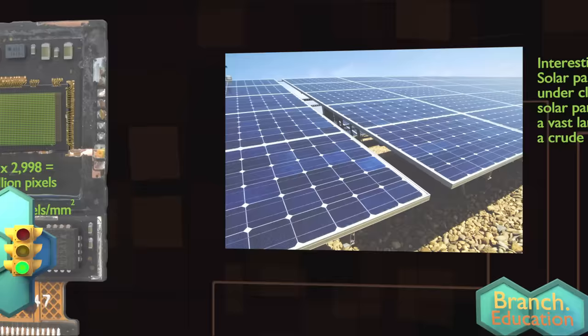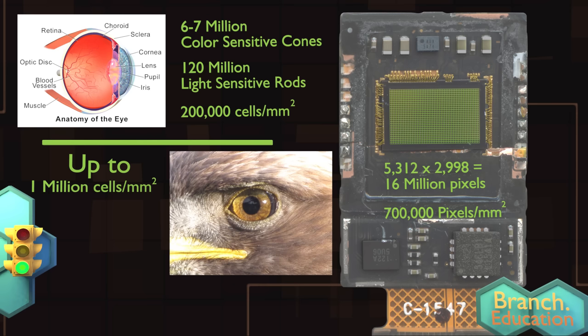As mentioned before, there are about 16 million of these tiny light-sensitive circuits in a camera's image sensor. For reference, in the human eye there are around 126 million light-sensitive cells. And then on top of that, eagles can have up to five times the density of light-sensitive cells as humans. These cameras are indeed amazing, but they still have a way to go.